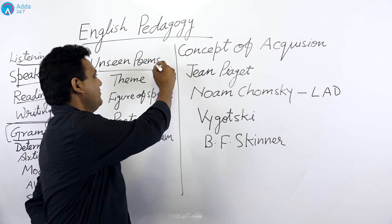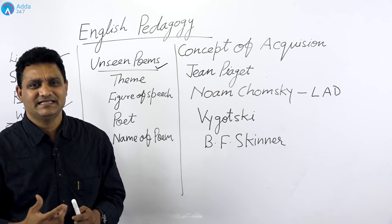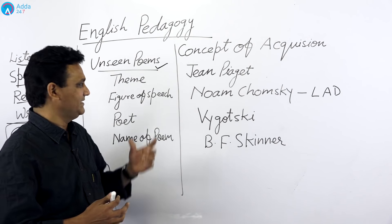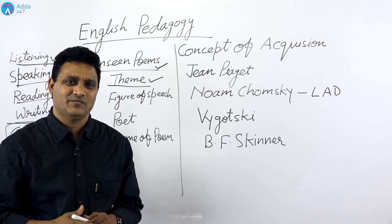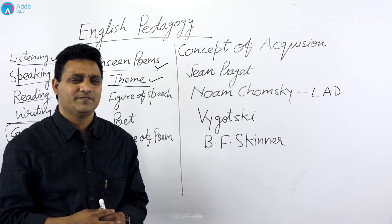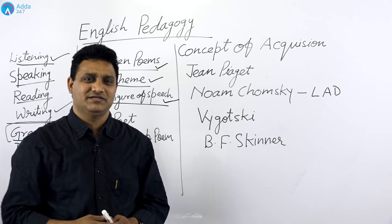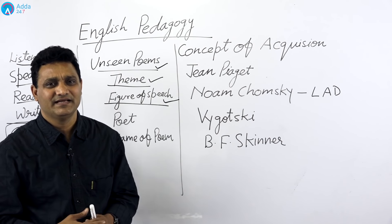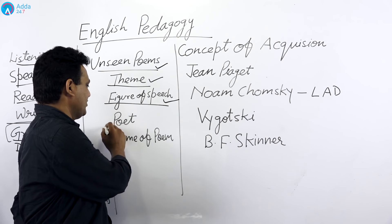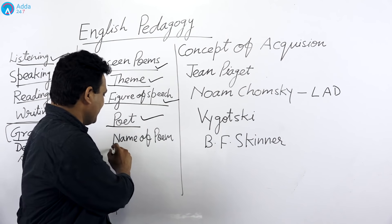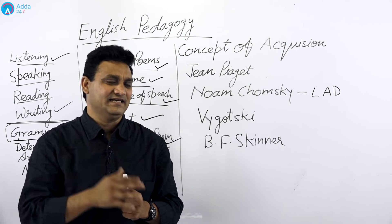Is ke baad unseen poem se, poem ke part se aap dhek saktate hai, poem se kuch questions puchhe jaate hai. Ek paragraph hota hai poem ka - two stanza, three stanza ki poem hoti hai. Poem mein aap dekhenge kya kya main kaam karna hai aapko. Ek to poem ke theme ko aapko batana hoga - basically nature ke oopar, mercy ke oopar, love ke oopar - kis cheez ke oopar theme hai, ye aapko determine karna hoga. Doosra hai figure of speech - kaunsa figure of speech hai, jaise simile, metaphor. Teesra - poet kaun hai, us particular poem ko likhne wala, aur name of the poem kya hai - ye kuch main cheezein hain jo aapko taiyar karke jaana hai.